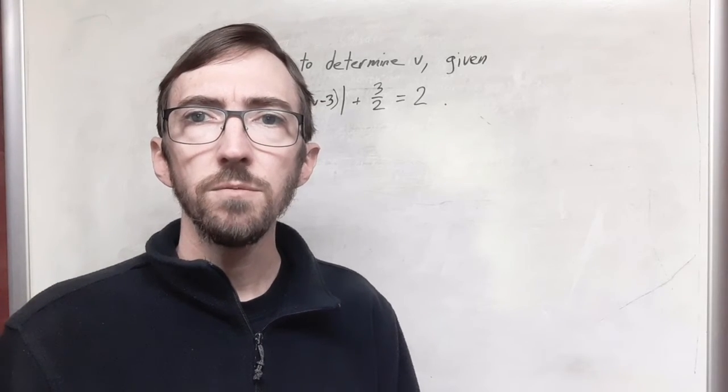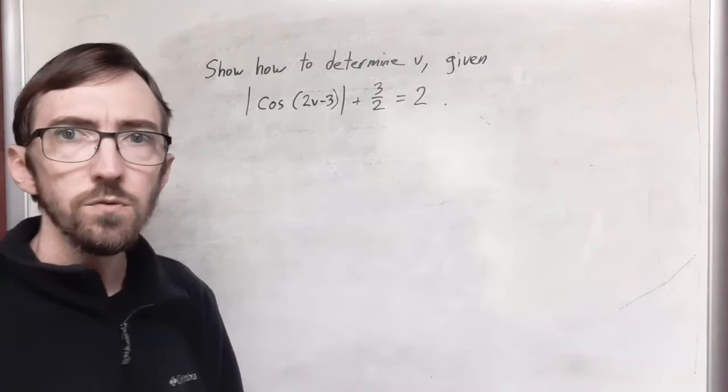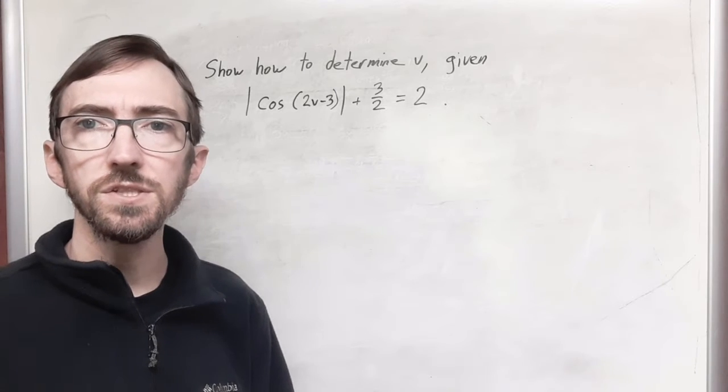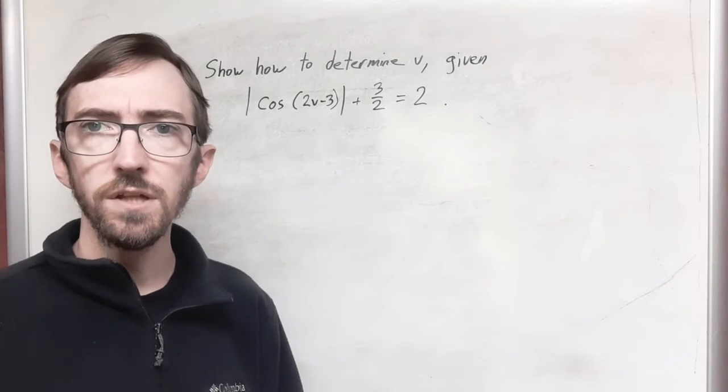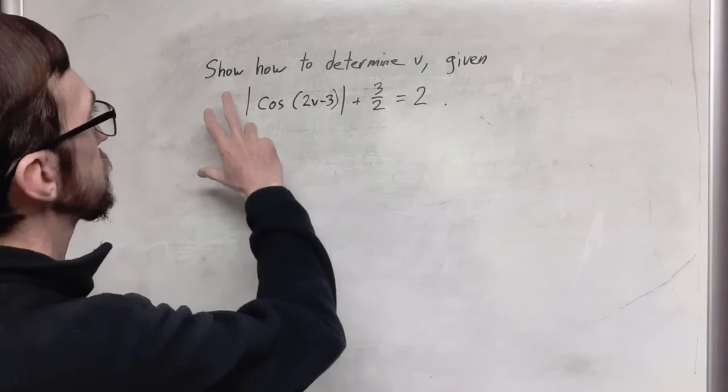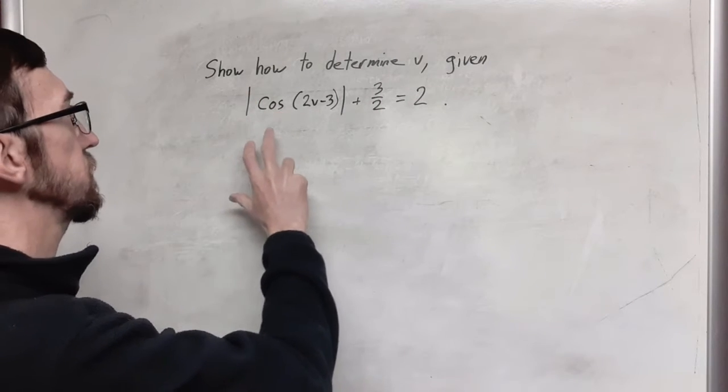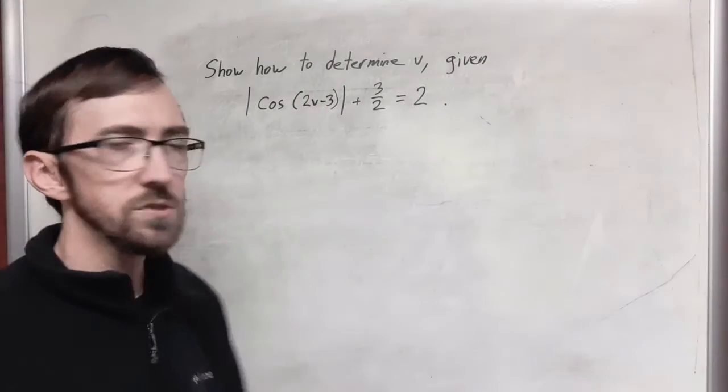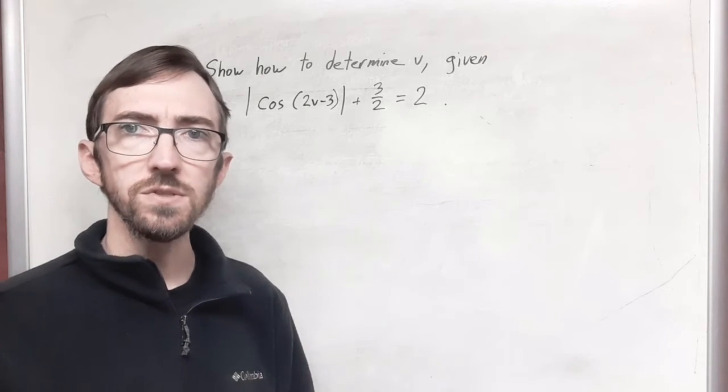The next problem that I'm going to solve is this one. This is also from the standards that I've been using. So this is something that colleges expect that incoming students going into a college calculus class should be reasonably expected to solve. And we are told to show how to determine v given the absolute value of cosine of 2v minus 3 plus 3 halves equals 2. And so we need to get to a point where v equals something.